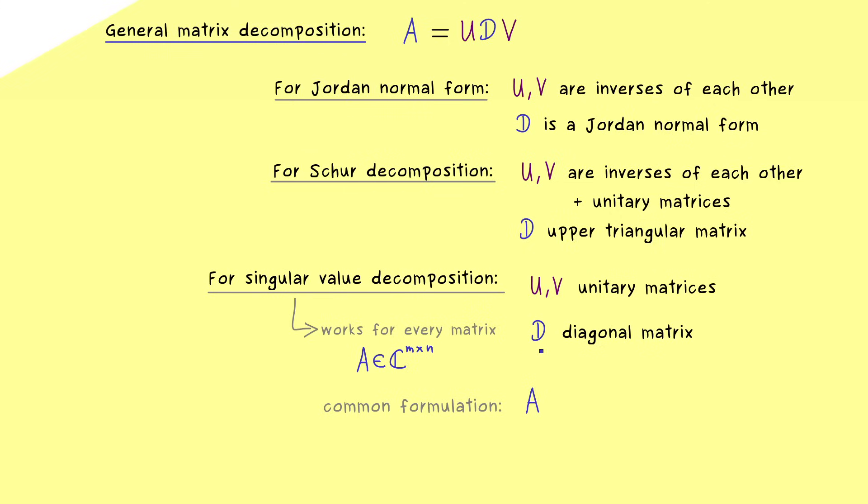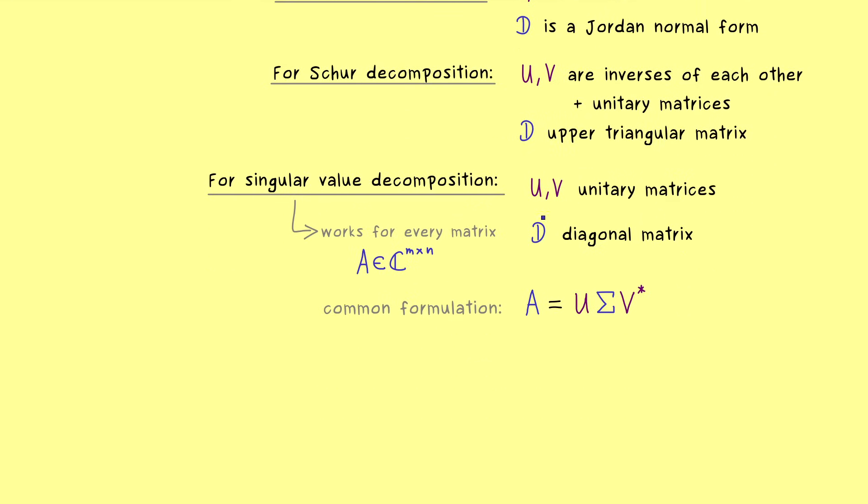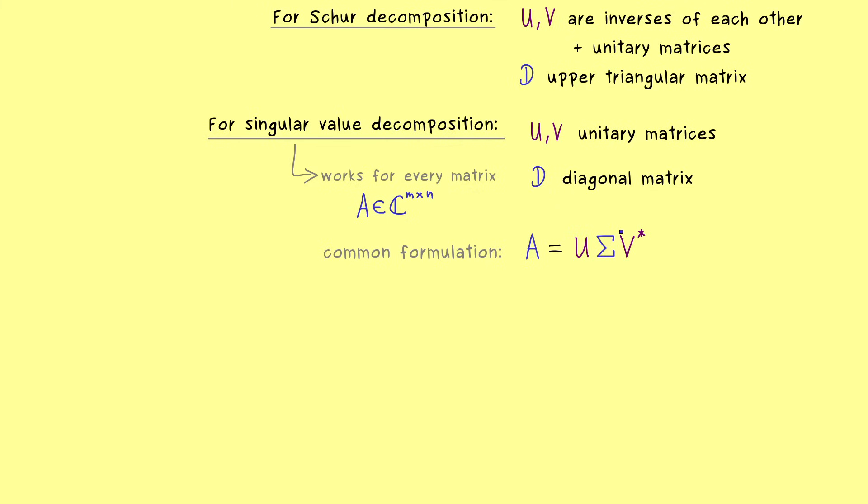we would use a sigma for the diagonal matrix. And on the right, instead of V, one would write V star, which makes no difference but it will be easier for the formulas later. So this is what you can already remember. The singular value decomposition uses a transformation with unitaries, which means we conserve lengths and angles, and we go to a diagonal matrix in the end. And since we deal with rectangular matrices,